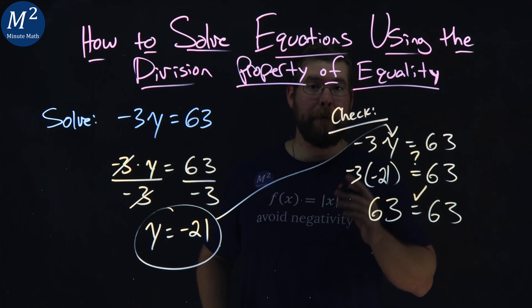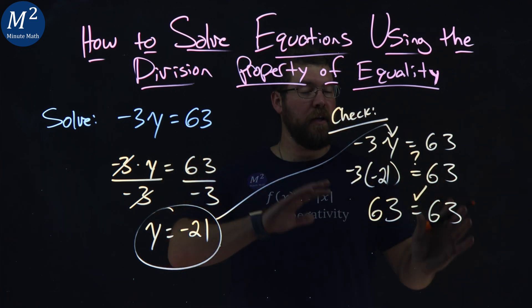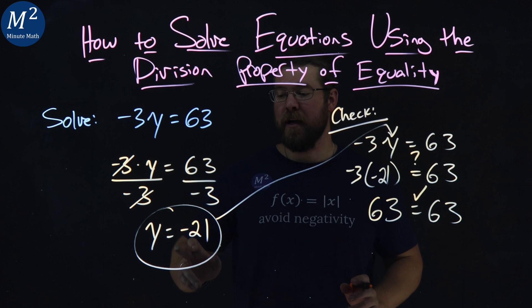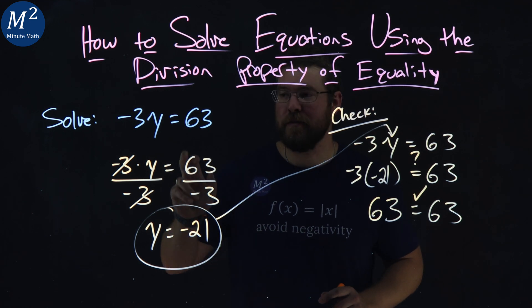Yes, it is. Meaning the left and right-hand side are equal, our check shows that negative 21 is a solution to our equation.